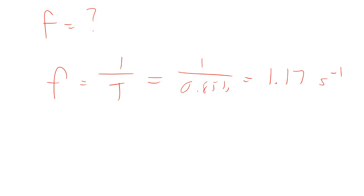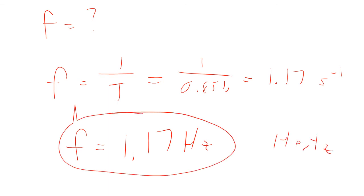Well, the oscillations per second or cycles per second is hard to say. And so we define a unit called a hertz. And that is oscillation per second. And so f would be 1.17 hertz. So that means it oscillates 1.17 times every second.